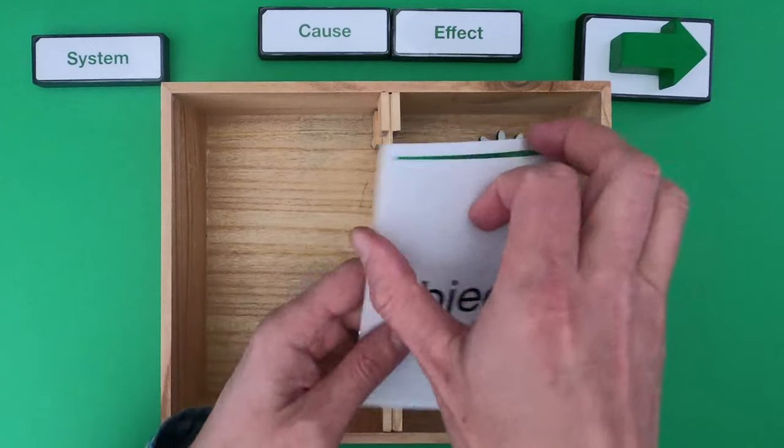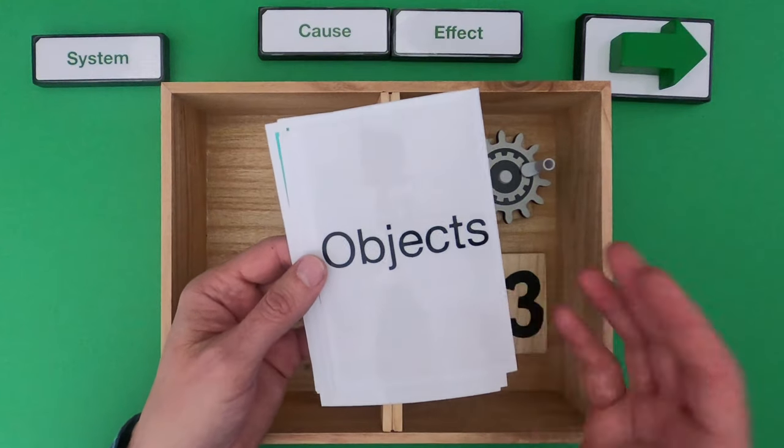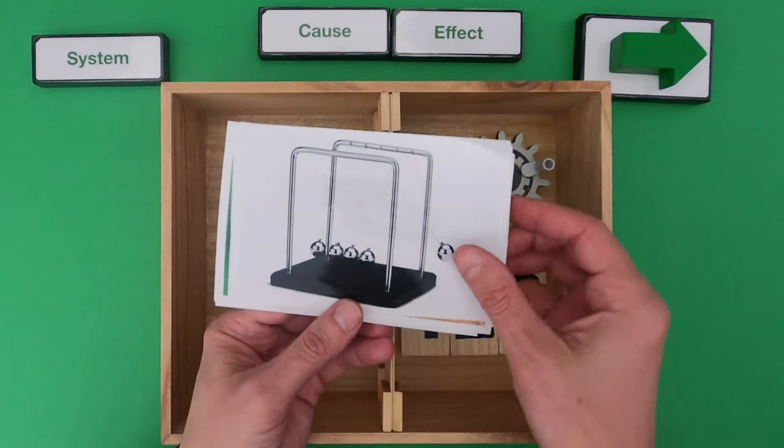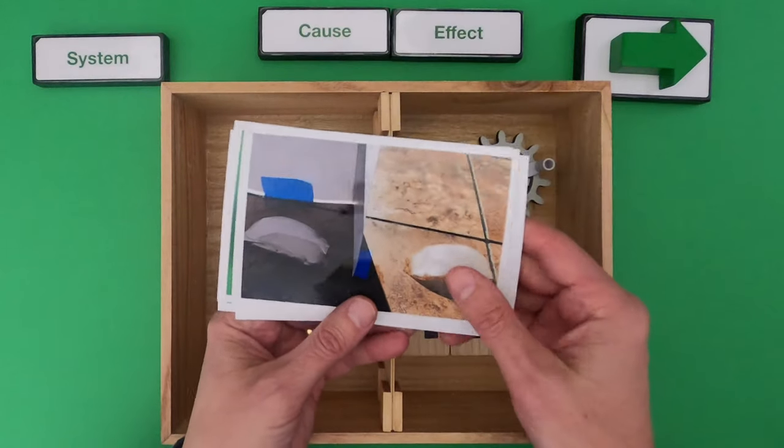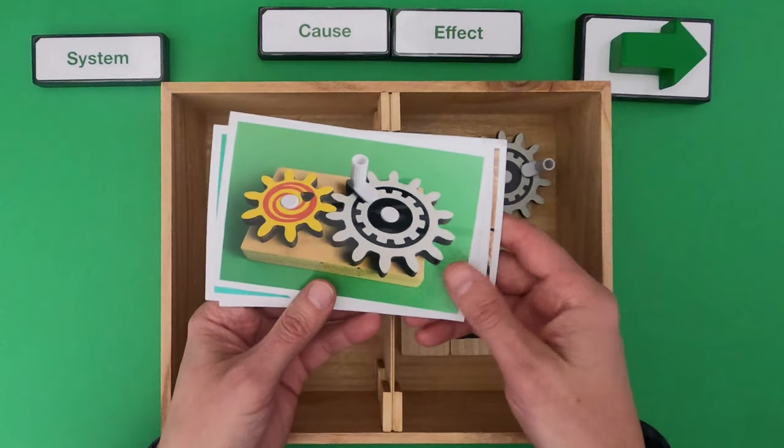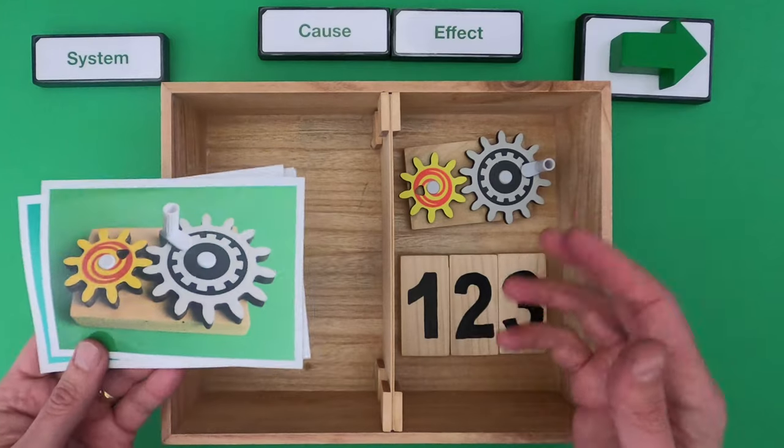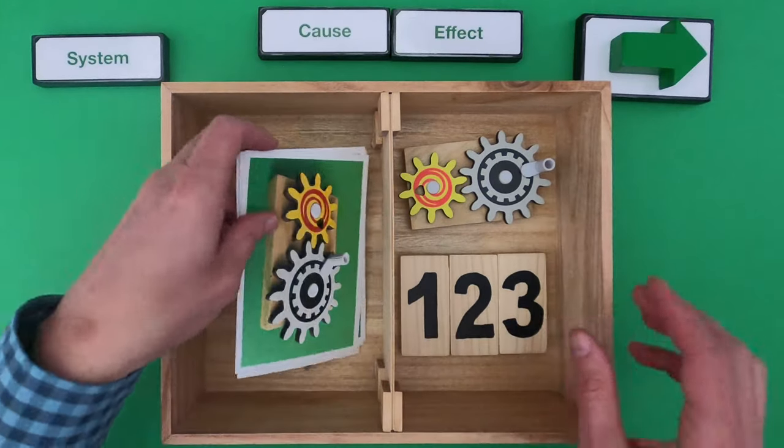By the time you're done watching this video, you should be able to understand cause and effect in more complex objects like Newton's cradle or the heating of the earth. But I'm going to start by showing you my thinking of cause and effect with this simple two-gear machine. I'll show you that and then we'll work on these dominoes together.